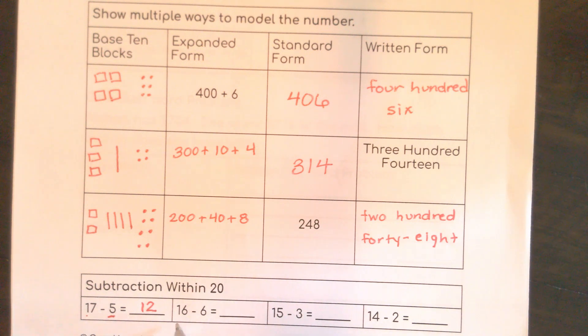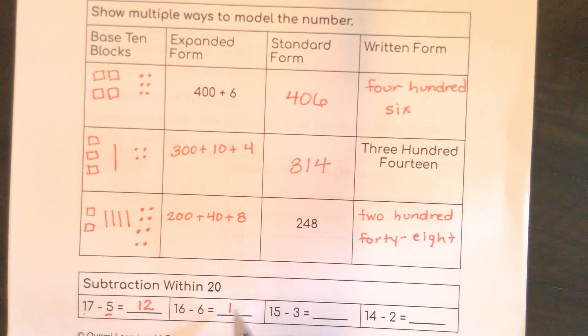Here, I have 16 minus 6. This should be so simple for us, because we have 16. And if I just take 6 away, I would have 10.